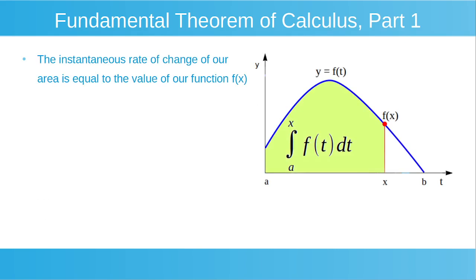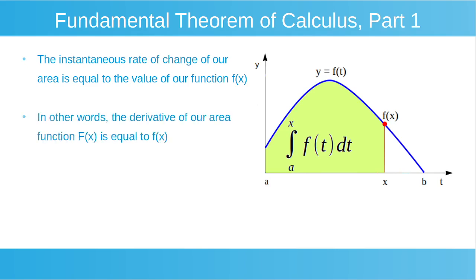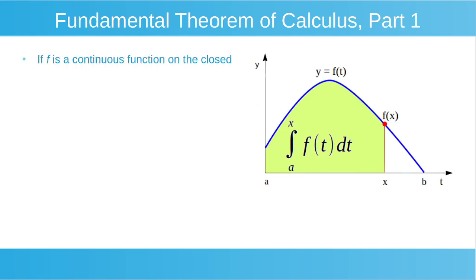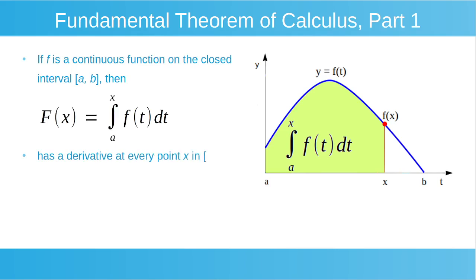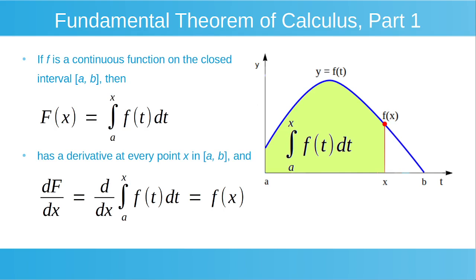The instantaneous rate of change of our area is equal to the value of our function f of x. In other words, the derivative of our area function capital F of x is equal to f of x. That's what our Fundamental Theorem of Calculus Part 1 is saying: if f is a continuous function on the closed interval from a to b, then capital F of x, expressed as the integral from a to x of f of t dt, has a derivative equal to f of x.